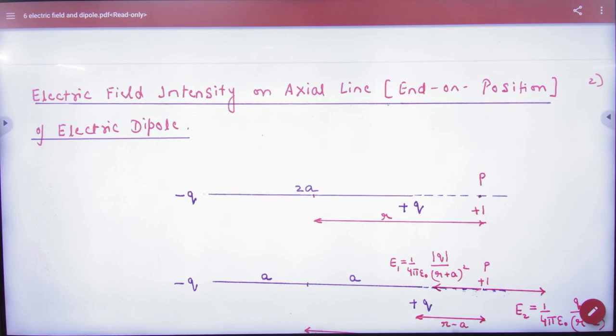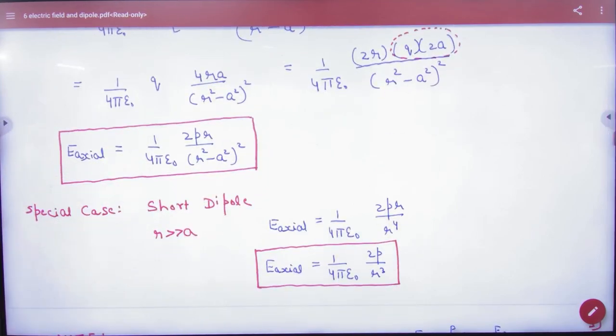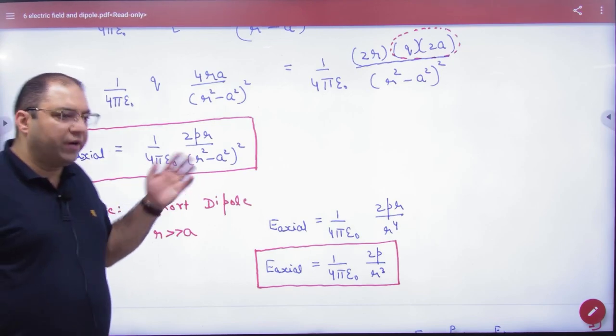Electric field intensity on axial line or end-on position: note this formula. E_axial = 2Pr/(r² - a²)² times 1/(4πε₀). Normally these calculations are very big, but sometimes we have short dipole cases.